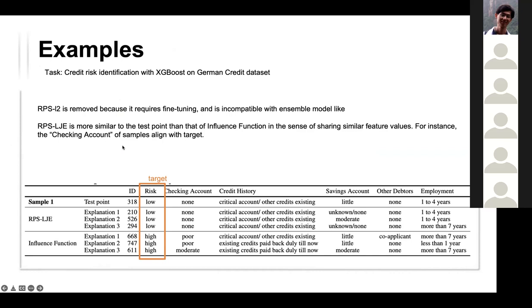For the credit risk dataset with XGBoost, RPS-L2 is removed from comparison because it requires fine-tuning and is incompatible with ensemble models. The method shows better explanation — for example, the checking account feature for test examples is shown to be consistently relevant.